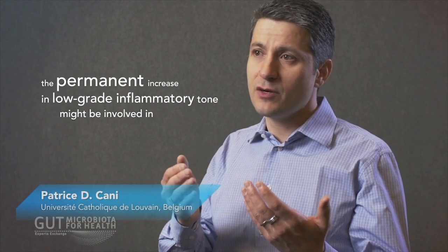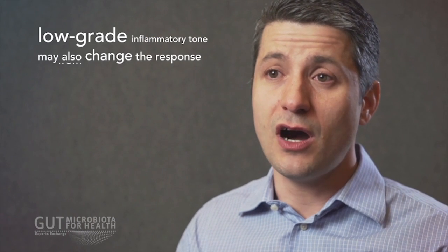The permanent increase in the low-grade inflammatory tone might be involved in the development of insulin resistance. I'm thinking about obesity and diabetes, where this low-grade inflammatory tone may contribute to the increased macrophage infiltration in the adipose tissue. This inflammation may also contribute to changes in hepatic inflammatory tone, leading to hepatic steatosis, but also alteration in steatohepatitis. There are also data suggesting that this low-grade inflammatory tone may also change the response from our gut-to-brain axis — in other words, if you change the gut-to-brain axis in appetite regulation, you will also have a decrease in reward because of the inflammation, thereby changing food intake behaviour and maybe also contributing to increased body weight gain and fat mass.